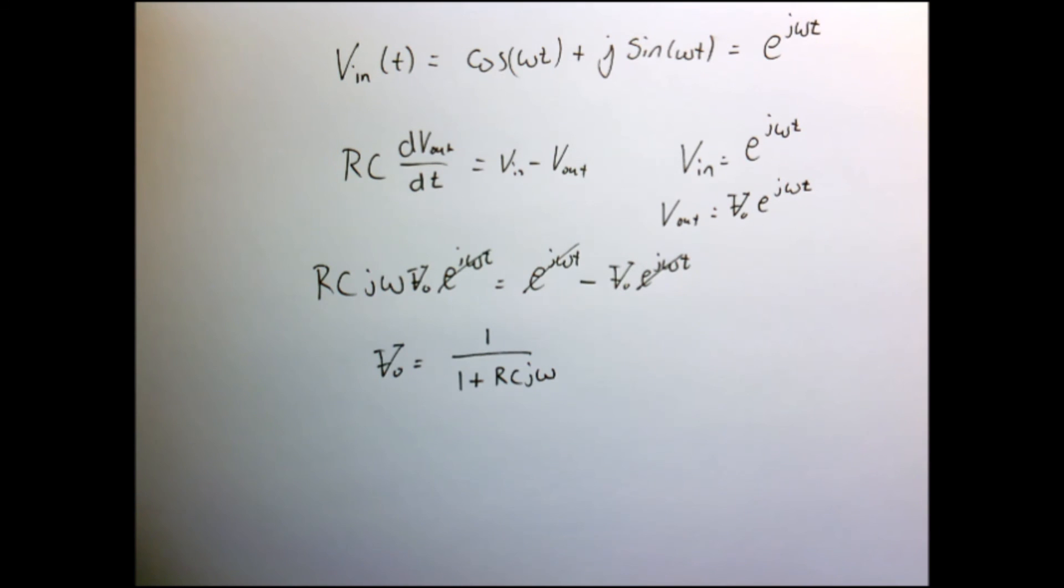And I can rearrange it for my complex number which sits out here as equally one over one plus rc j omega, which was a heck a lot easier because I didn't need to know or remember a single trig identity, and I was able to basically get the derivation in one line.